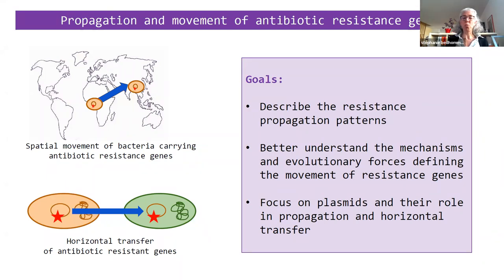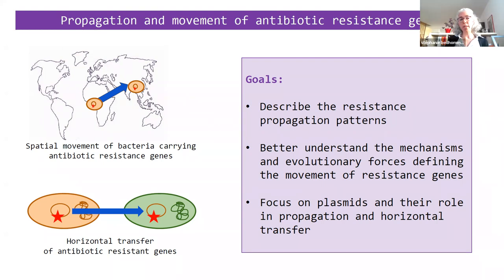There are actually two big ways by which resistance genes can propagate. The first one is spatial movement of bacteria carrying resistance genes — by spatial I mean geographical movement from one region to another, one country to another, but also ecological movement from one biome to another, one environment to another. The other way by which they can propagate is of course by horizontal gene transfer — the transfer of the gene from one species to another or one strain to another. The general goals of the study were to describe the resistance propagation patterns and to better understand the factors, mechanisms, and evolutionary forces defining the movement of these resistance genes. I will focus on specific things we found about plasmid and mobile genetic element carriage.